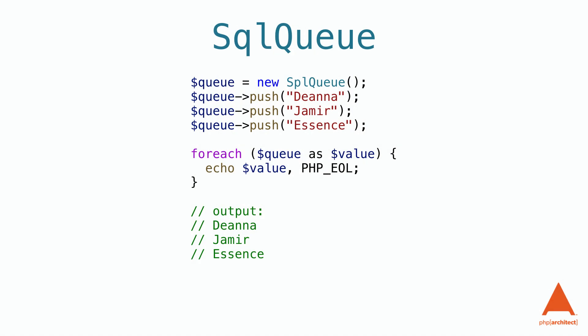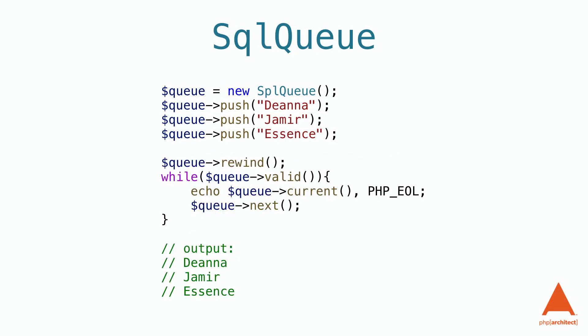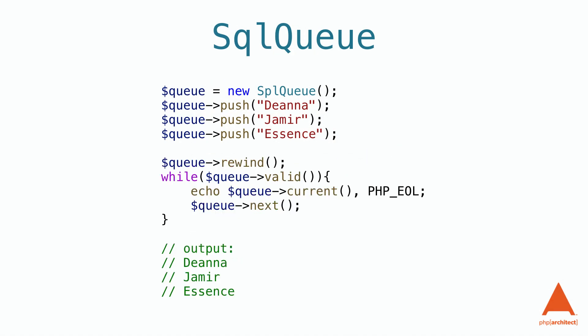Ideally, we would just push elements into the queue and then remove them when we're ready to process them. But we may also need to iterate through the elements to see what's inside the queue. There are two ways to do this. The first is using a foreach loop. The other is using some of the other public functions of the SplQueue. foreach is best for almost every case — it's less code, which is generally easier to read.